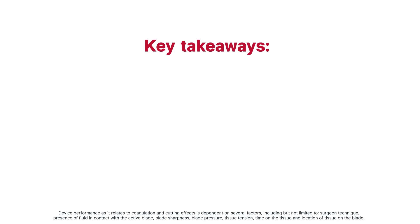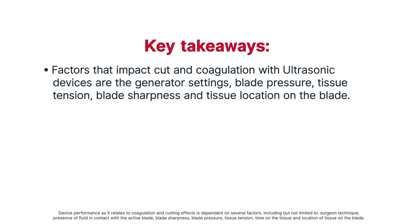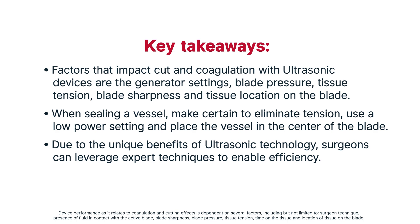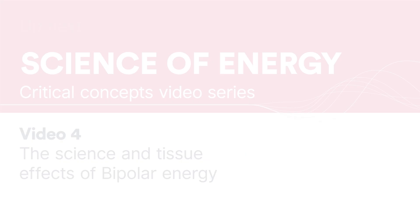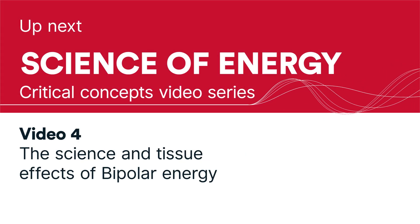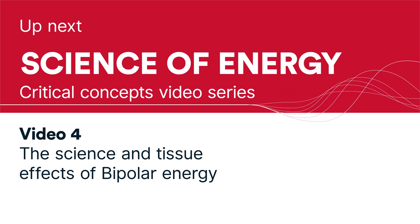Key takeaways. Factors that impact cut and coagulation with ultrasonic devices are the generator settings, blade pressure, tissue tension, blade sharpness, and tissue location on the blade. When sealing a vessel, make certain to eliminate tension, use a low power setting, and place the vessel in the center of the blade. Due to the unique effects of ultrasonic technology, surgeons can leverage expert techniques to enable efficiency. In the next video, we will introduce bipolar energy and how it uses electricity between the jaws of the device to coagulate and seal tissue.